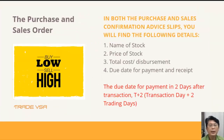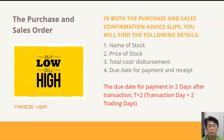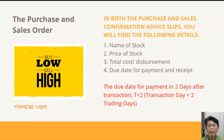The purchase and sales order usually involves four things: the name of the stock, price, total cost, and the due date. There is this thing called T plus 2 — depending on your broker, some offer T plus 3 or T plus 5 — which means you have up to 2 days from the transaction day to pay up. It's a bit like a credit card where you get a free credit period of 2 to 3 days. Most brokers offer somewhere between T plus 2 and T plus 3.